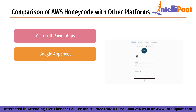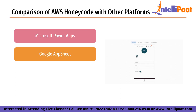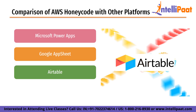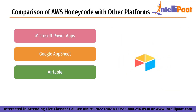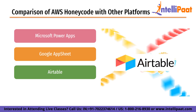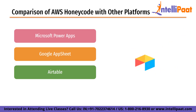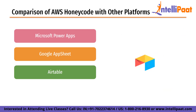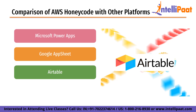Next is Google AppSheet, another popular app development platform that provides similar functionality to Honeycode. AppSheet offers a range of templates and integrations with other Google services such as Sheets, Drive, and Maps, and provides advanced features such as AI and machine learning capabilities. Like PowerApps, AppSheet can be more complex to use than Honeycode. Next on our list is Airtable — a popular cloud-based database and app development platform. Airtable offers templates and integrations with services such as Slack and Trello, as well as automation and scripting capabilities. While Airtable is more powerful than Honeycode, it can be more complex to use.